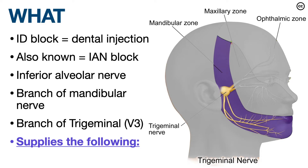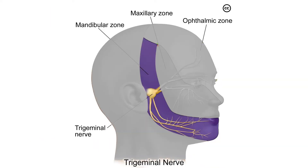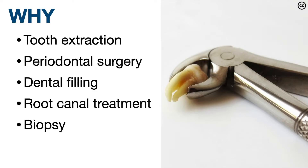What is an ID block? It's also sometimes referred to as an IAN block or an inferior alveolar nerve block. This is a branch of the mandibular nerve, which is a branch of the trigeminal nerve, or V3. Highlighted in purple are the areas innervated by the mandibular nerve. Any time we do treatment involving the lower teeth or an area supplied by the mandibular nerve, we need to do an ID block to prevent pain.